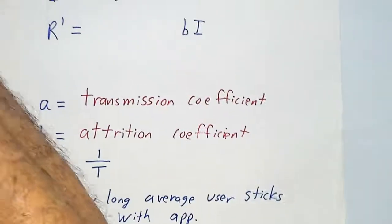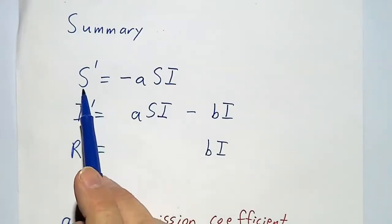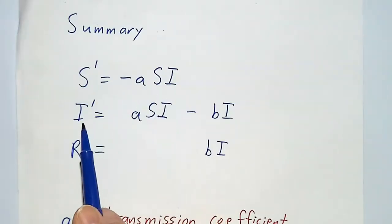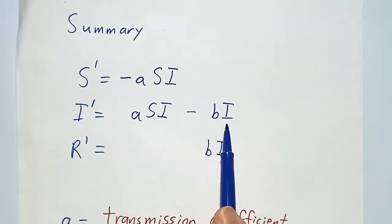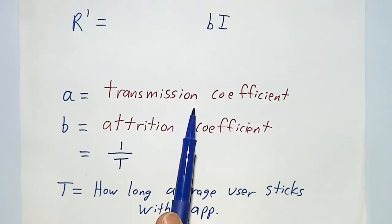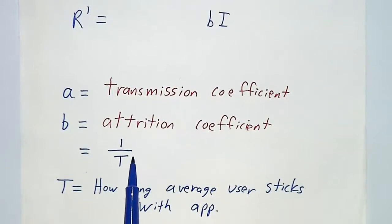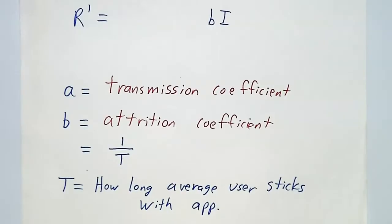Now we've got our model. We have equations for S, I, and R. We lose potentials at a rate A·S·I as they become actives. We gain actives at a rate A·S·I, but we lose them at a rate B·I. We gain rejecteds at a rate B·I. A is the transmission coefficient — it's a little complicated to figure out. B is the attrition coefficient, which is 1 over the average amount of time a customer keeps using the product before getting tired of it. T is the average user length, and that's the complete model.